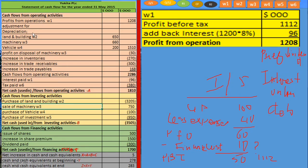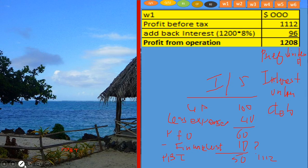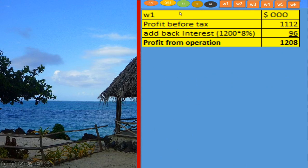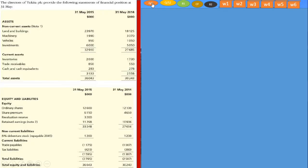After profit from operations, we need to add adjustments for depreciation on all non-current assets. Depreciation for land and building is 650, machinery is 660, and vehicle is 200, totalling 1,510 to be added back as non-cash expenses. To calculate each depreciation figure, we need to make a ledger for each non-current asset. Let's also look at the additional information regarding depreciation.